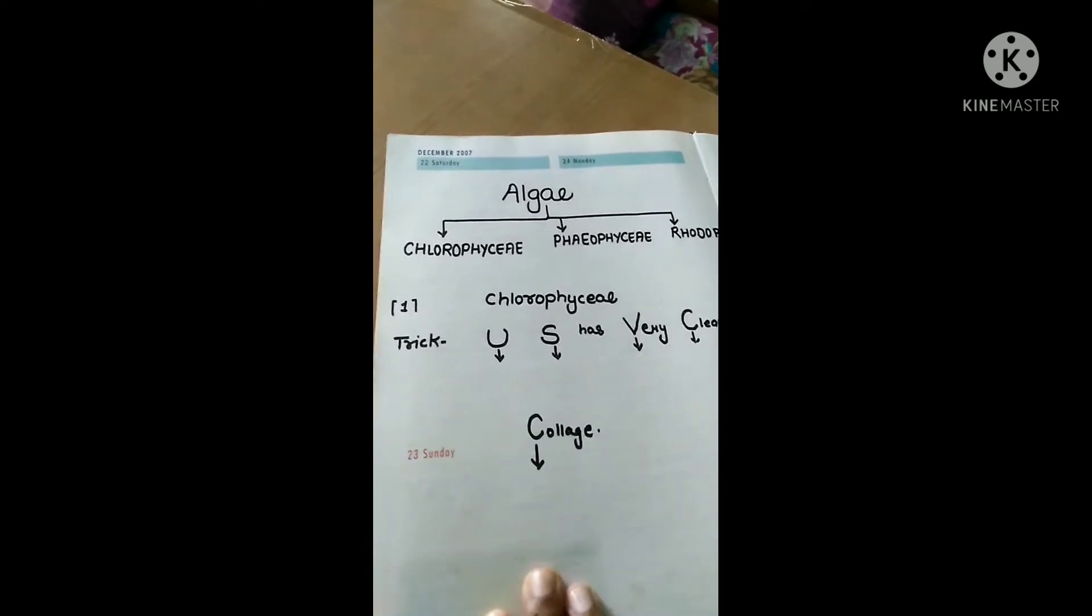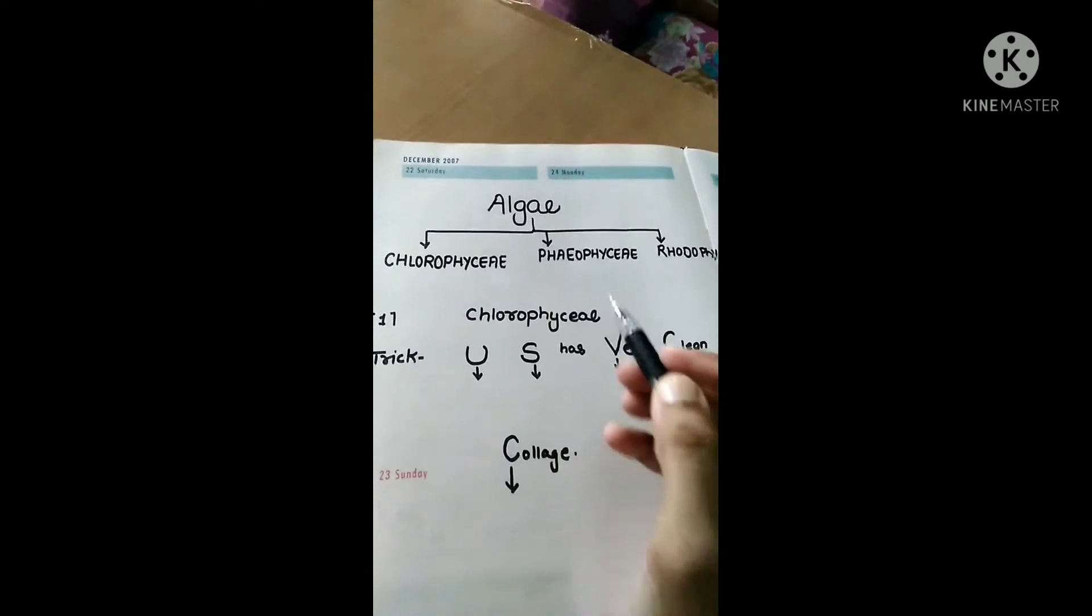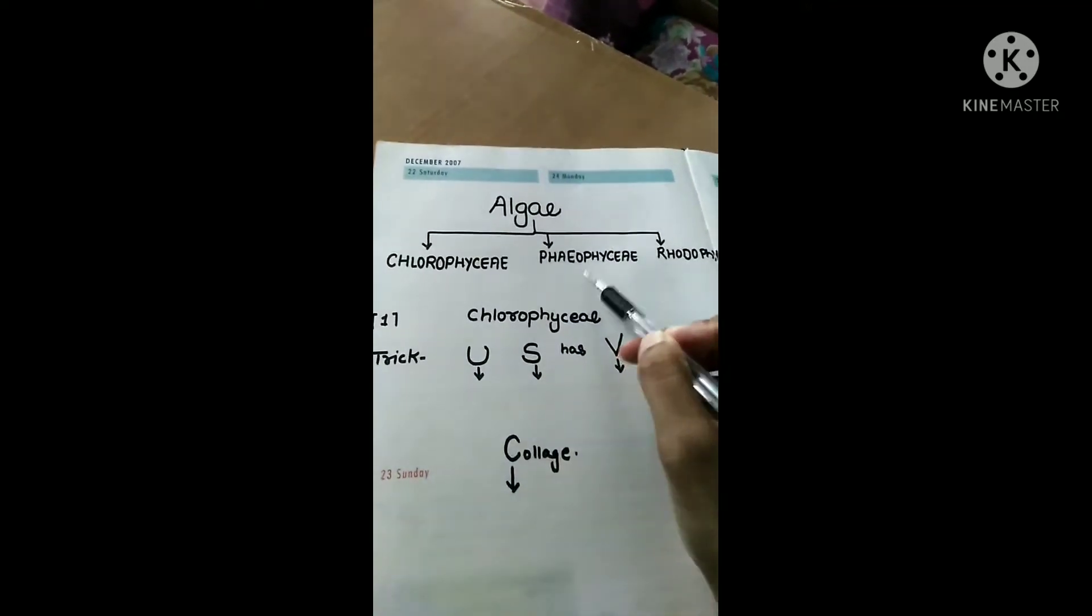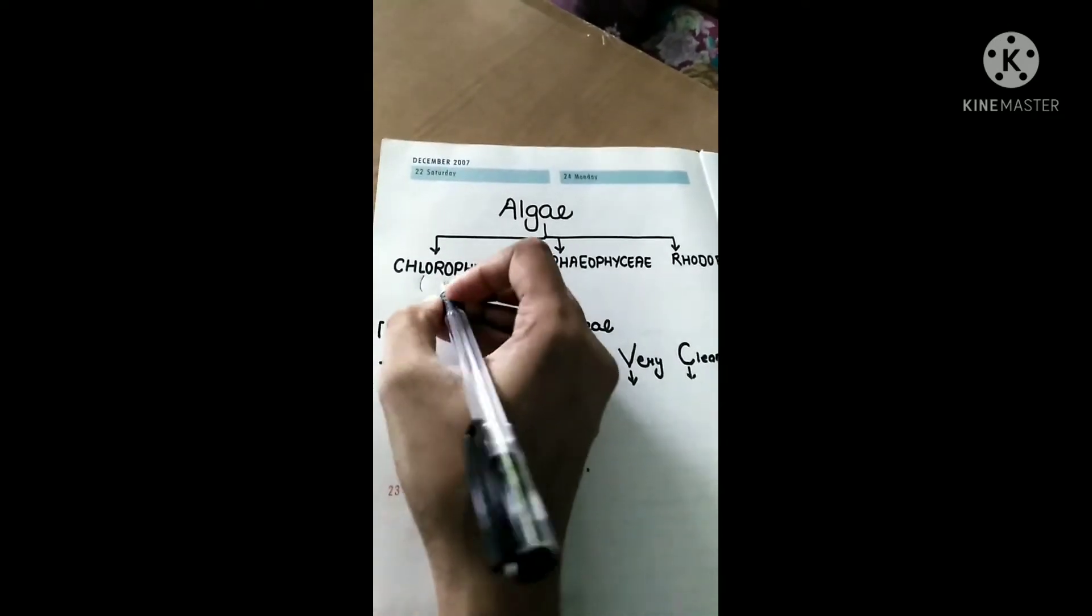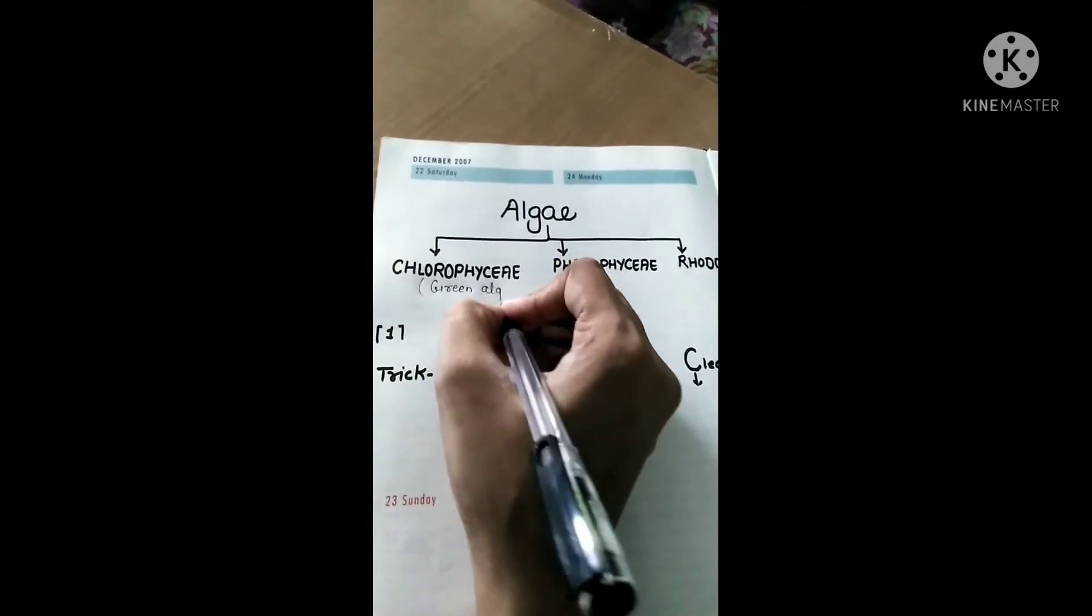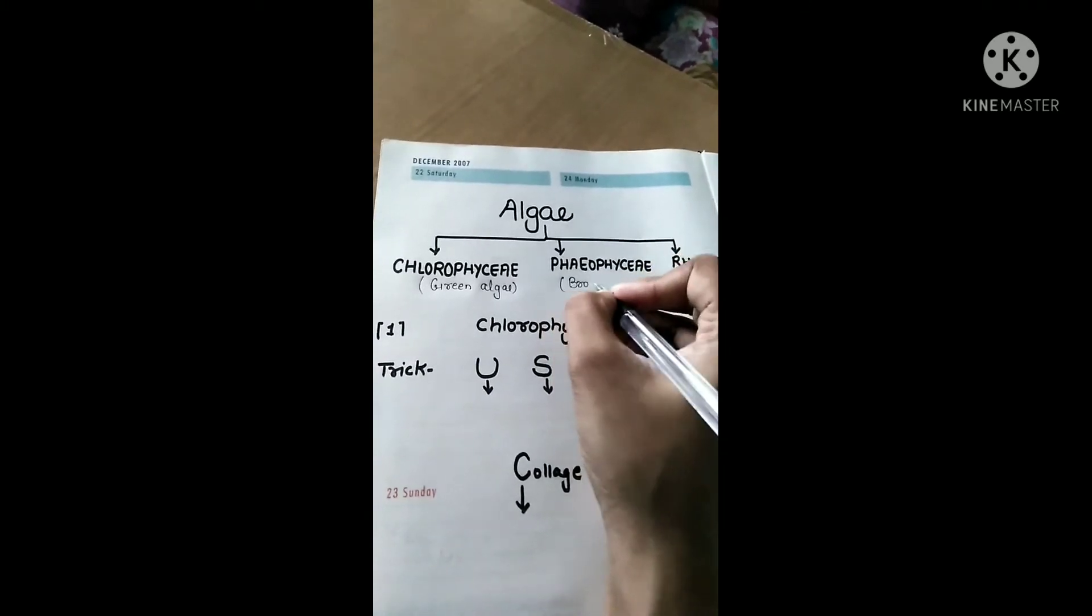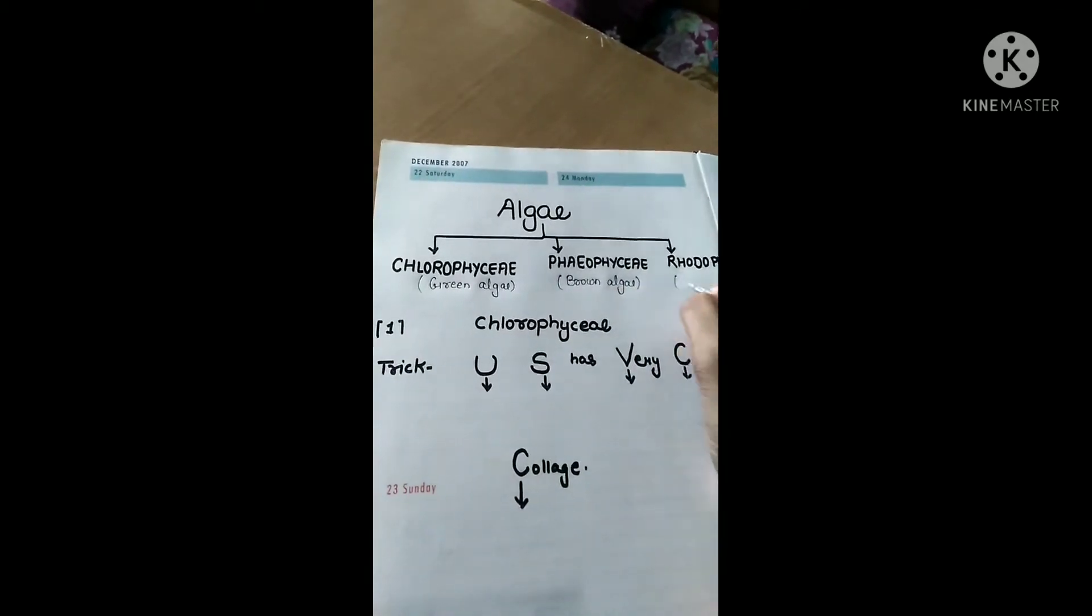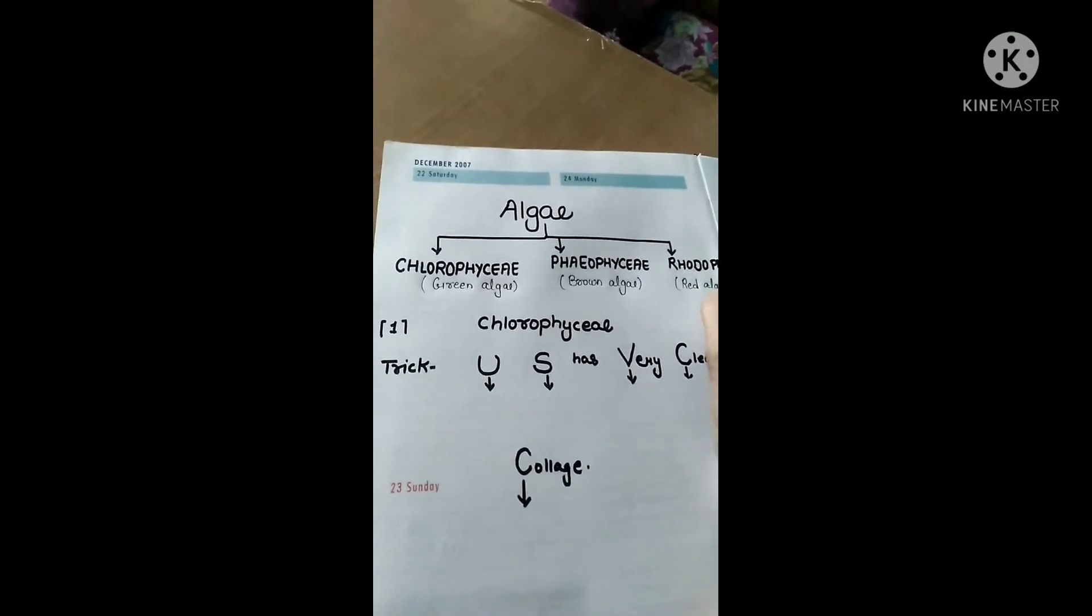Hello guys, welcome back to my channel. Today I am going to show you some tricks of algae. Algae are classified into three classes: Chlorophyceae, Phaeophyceae, and Rhodophyceae. Chlorophyceae are green algae, Phaeophyceae are called brown algae, and Rhodophyceae are called red algae.